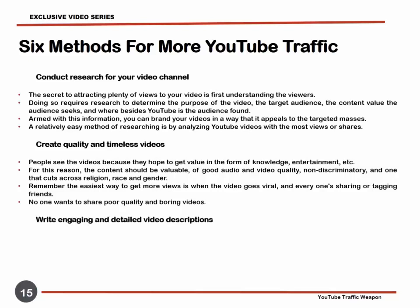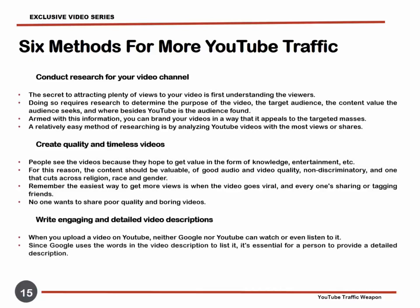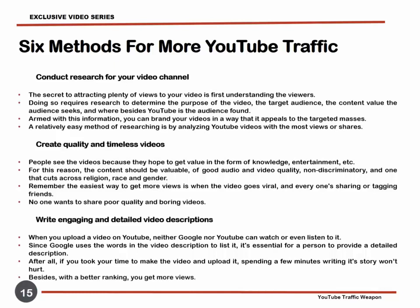Write Engaging and Detailed Video Descriptions. When you upload a video on YouTube, neither Google nor YouTube can watch or even listen to it. Instead, they rely on the text a person used to describe the video to understand and even rank the video. Since Google uses the words in the video description to list it, it is only prudent for a person to provide a detailed description. After all, if you took your time to make the video and upload it, spending a few minutes writing its story won't hurt. Besides, with a better ranking, you get more views.